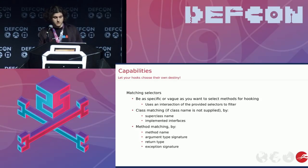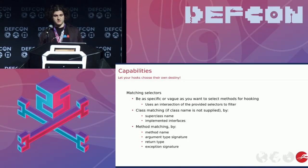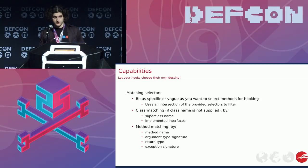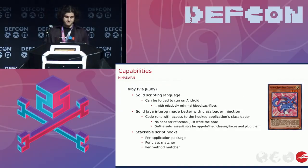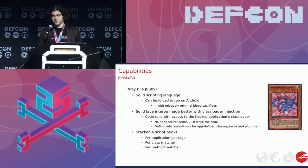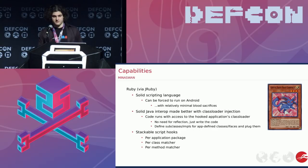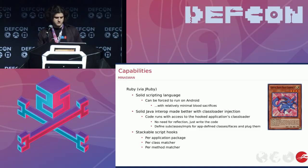Method matching uses the method name, the argument type signature, the return type, and the exception signature. Whatever the total combined set of those is, it will find it — or you can be as vague as you want. If you want to just hook toString on Object, anything that subclasses Object, you're going to get a lot of stuff. JRuby specifically is pretty useful in this case — much better than Groovy was when I attempted it the first time. It has very good interop with the Java parts, with only a few cases where you have to do a little bit of reflection to get around some annoying ProGuard stuff.